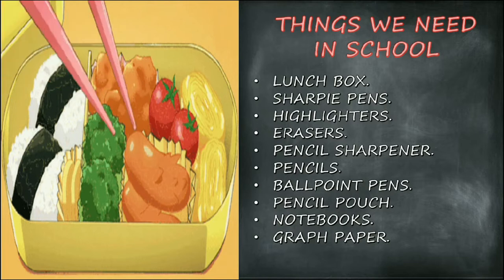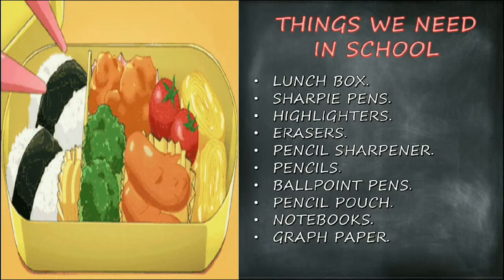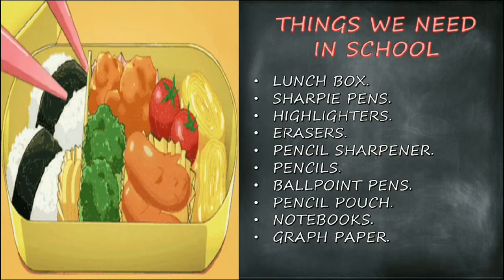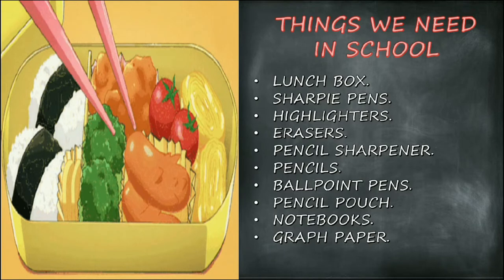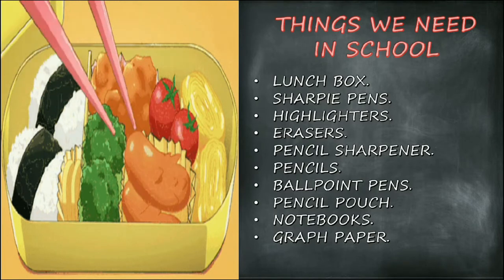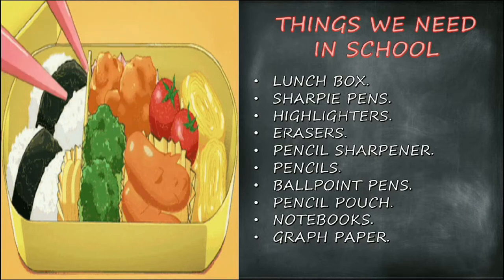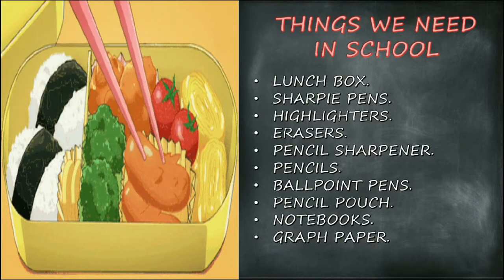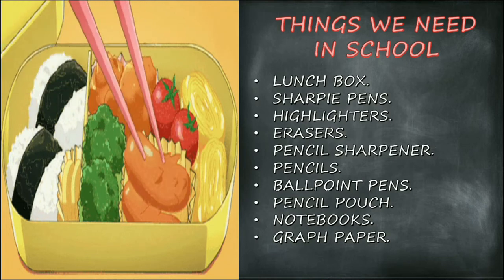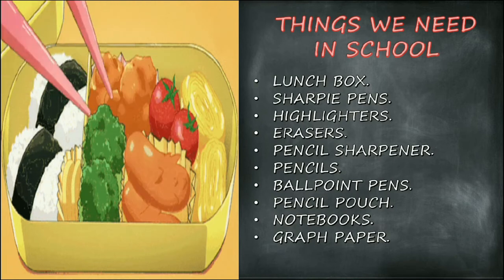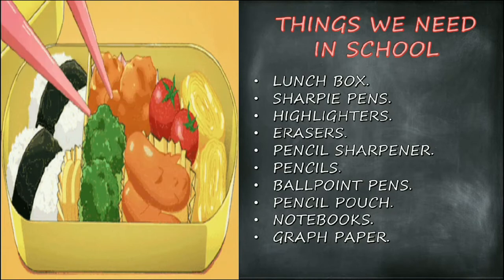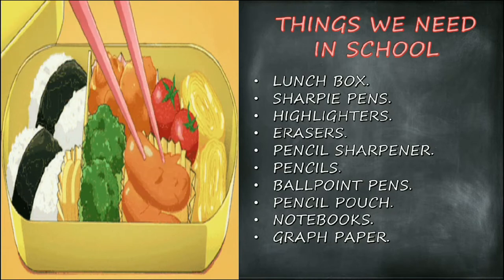Things we need in school: we need a lunchbox, sharp pens, highlighters, eraser, pencils, sharpener, ballpoint pens, pencil pouch, notebooks, and graph papers. This may differ from standard to standard — KG children do not need as many things as higher class students, so the list will differ depending on the grade.